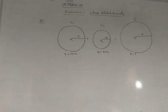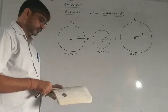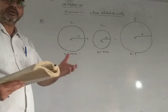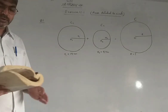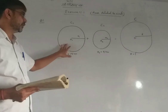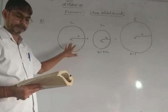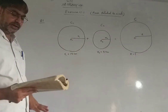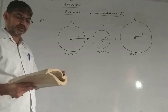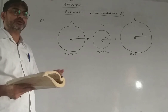The radius of two circles are 19 cm and 9 cm respectively. Find the radius of the circle which has circumference equal to the sum of the circumference of the two circles.